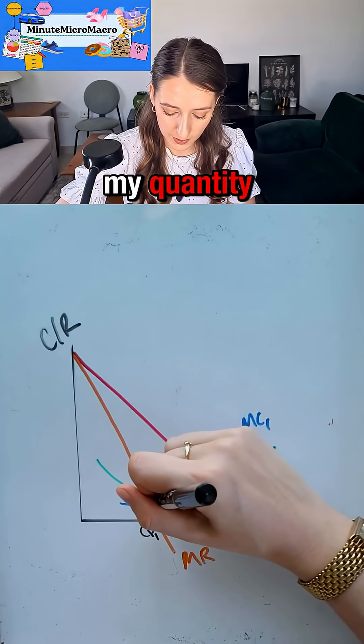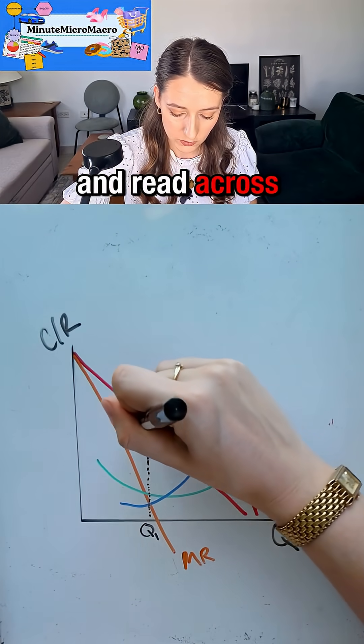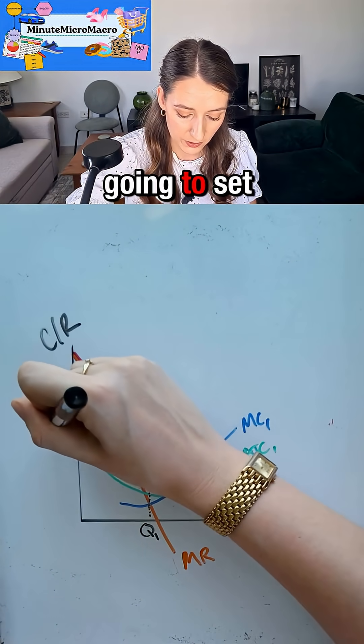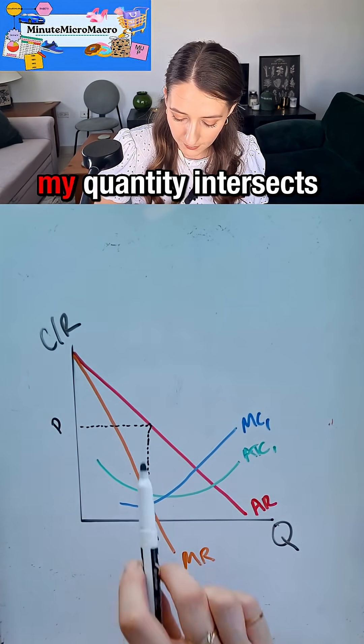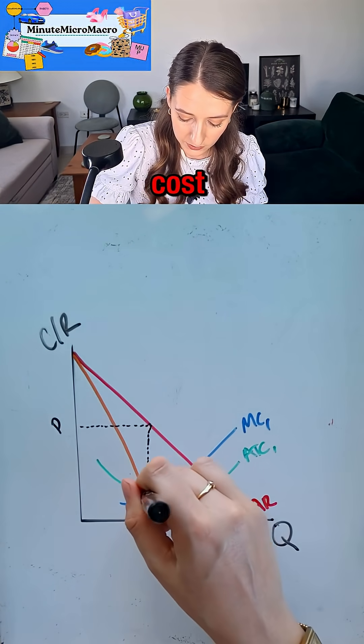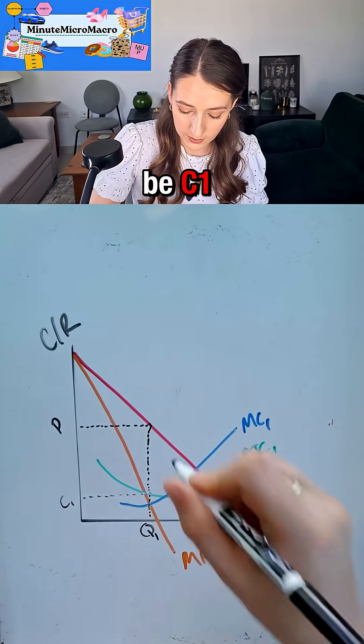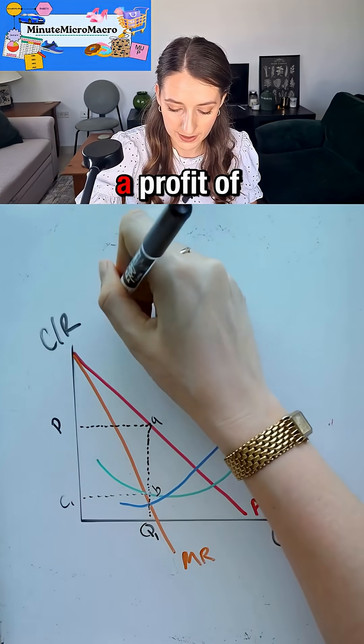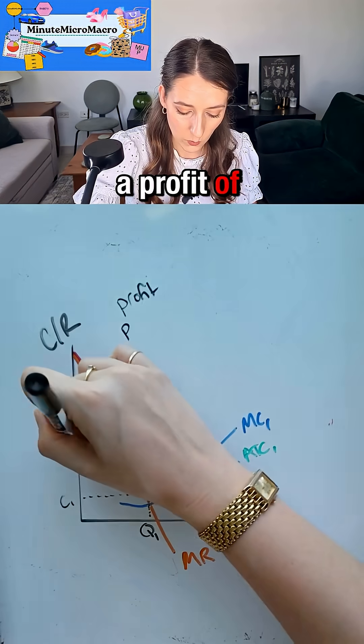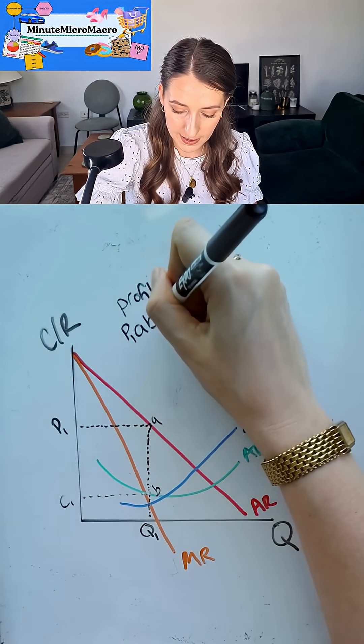I read up from my quantity until I hit my average revenue and read across. That sets the price that the firm is going to set for their product. I'm going to read across from where my quantity intersects my average total cost, and that's going to be C1. I'm going to label this point A and this point B so I can say that my firm is making a profit of P1ABC1.